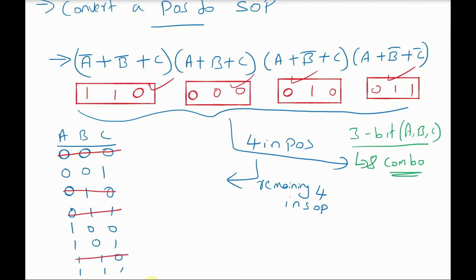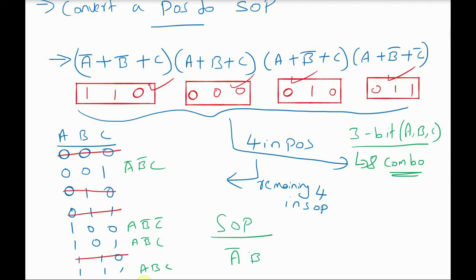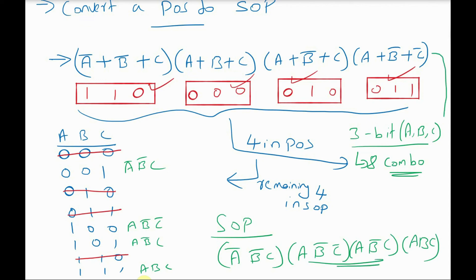So the remaining combinations needed for SOP are 0,0,1 — 1,0,0 — 1,0,1 — 1,1,1. In SOP expression, we multiply all the variables and put a bar where the bit is 0. So 0,0,1 gives A̅B̅C; 1,0,0 gives AB̅C̅; 1,0,1 gives AB̅C; and 1,1,1 gives ABC. Therefore, the equivalent SOP expression for the given POS expression is: A̅B̅C + AB̅C̅ + AB̅C + ABC.